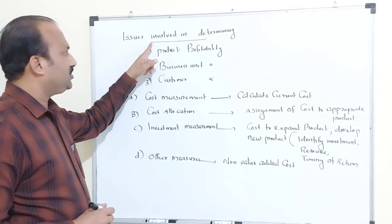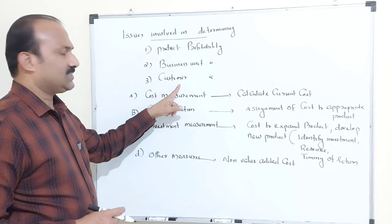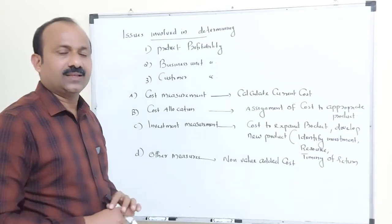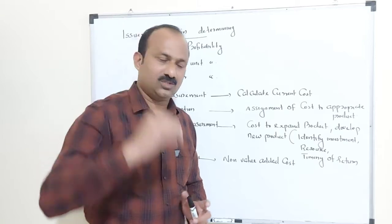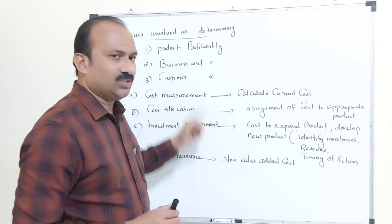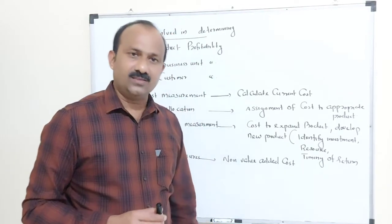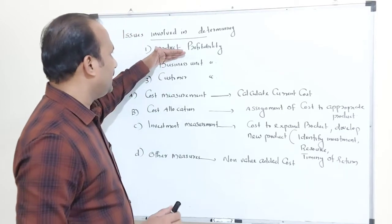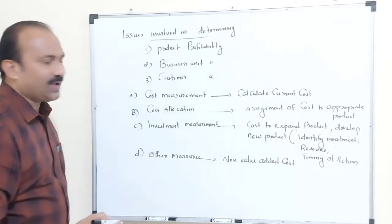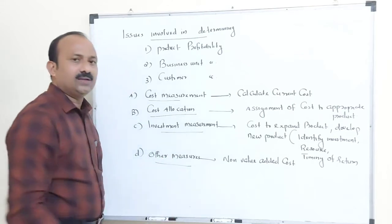We have to discuss issues related to product profitability, business unit profitability, and customer profitability. An organization sometimes needs to calculate product profitability to decide whether to continue with a product. For a business unit, they assess if it is required. For customers, they decide whether to retain that particular customer. To do this analysis, you have to measure costs, allocation, investment measurement, and other measures.